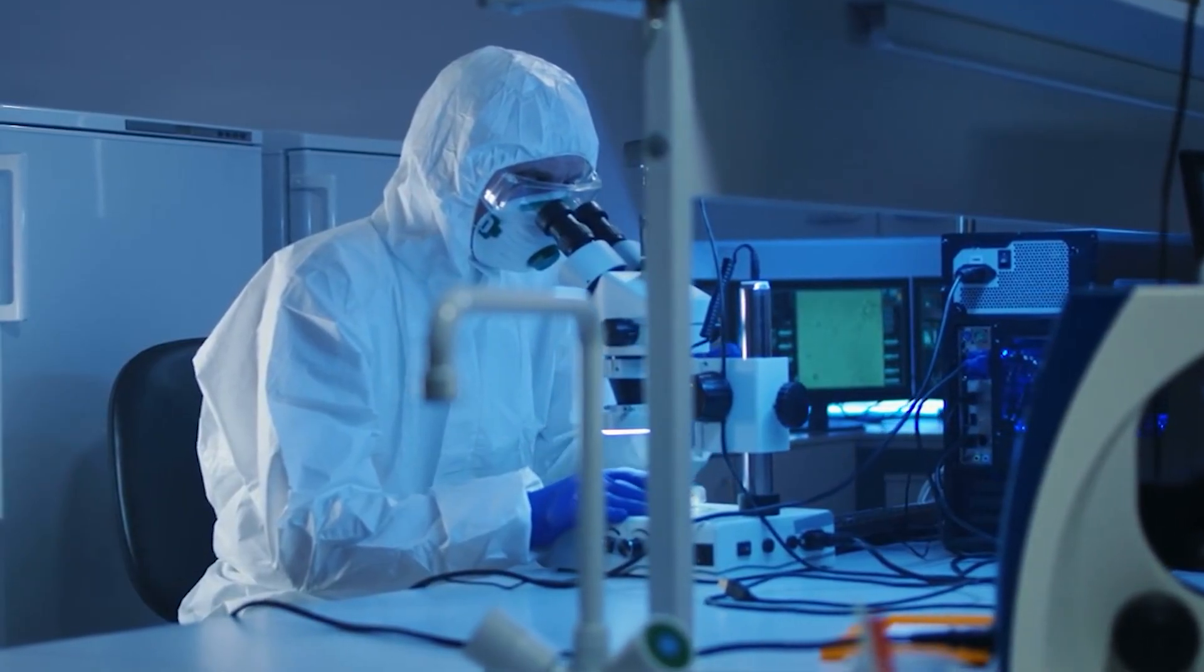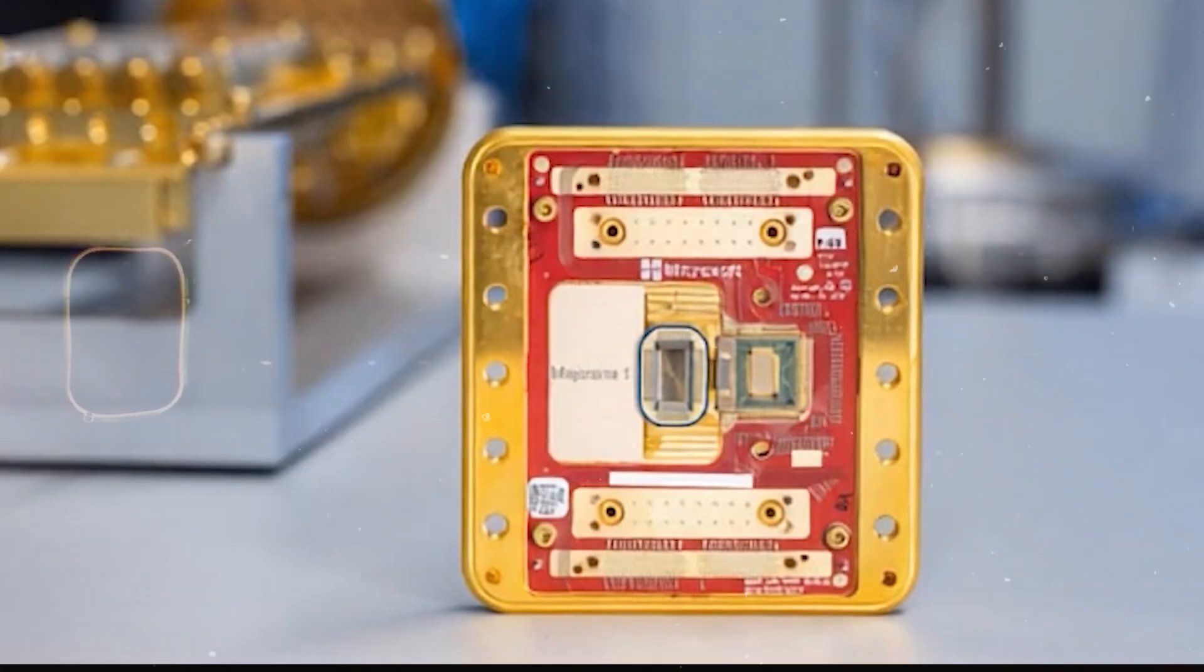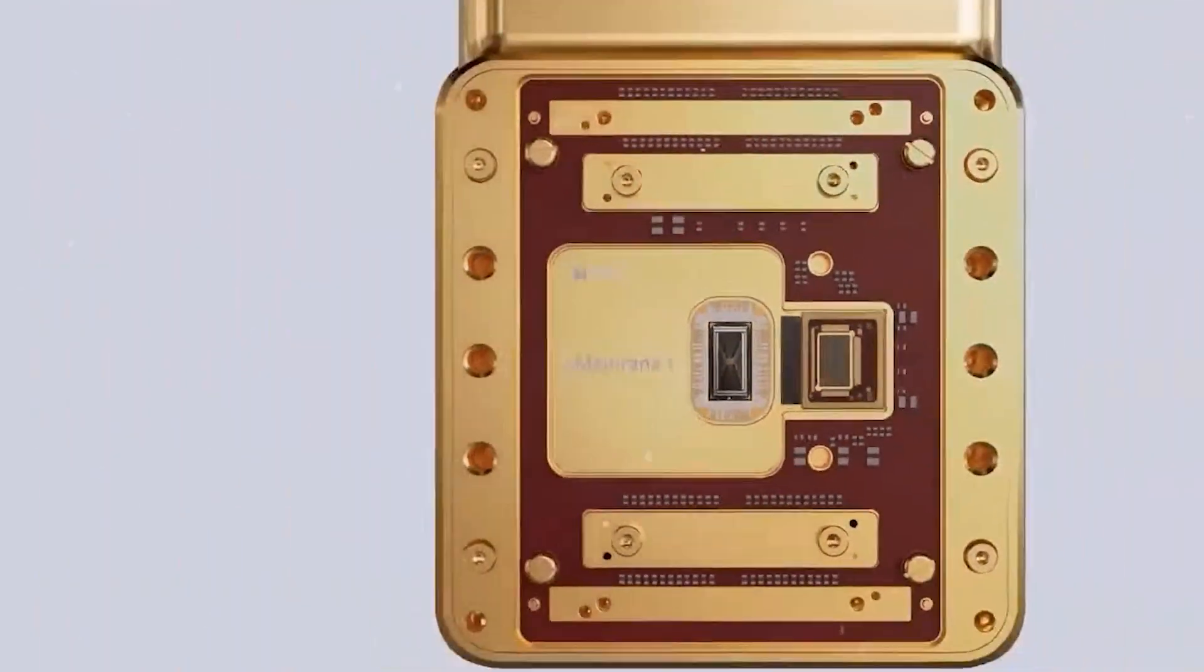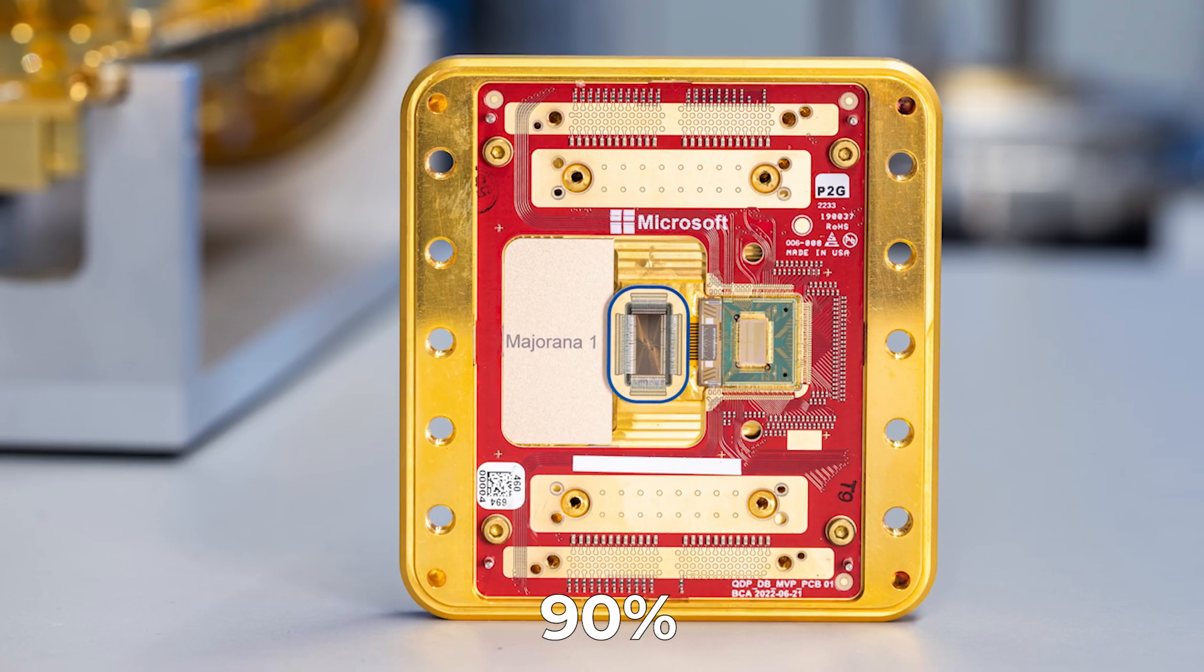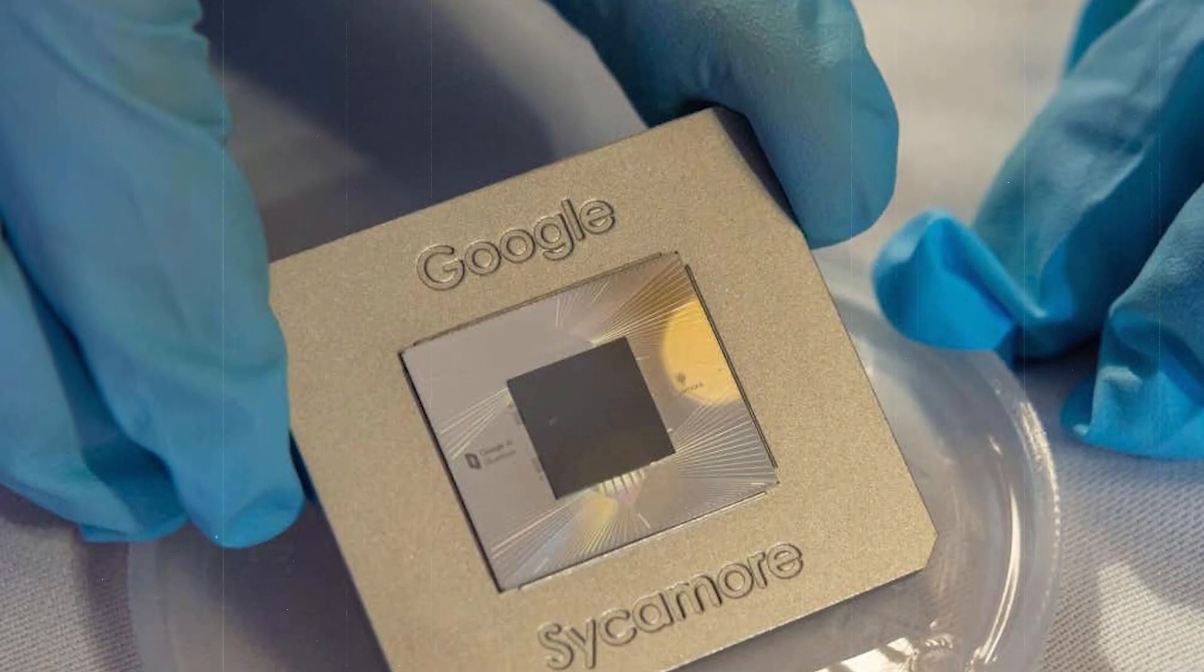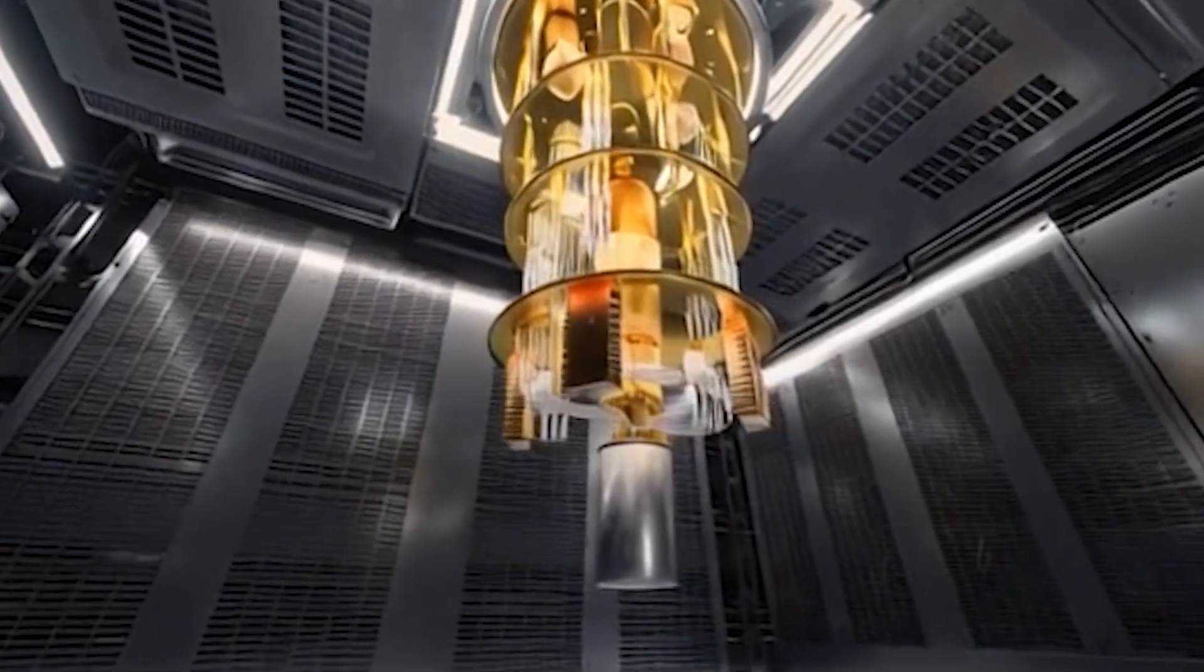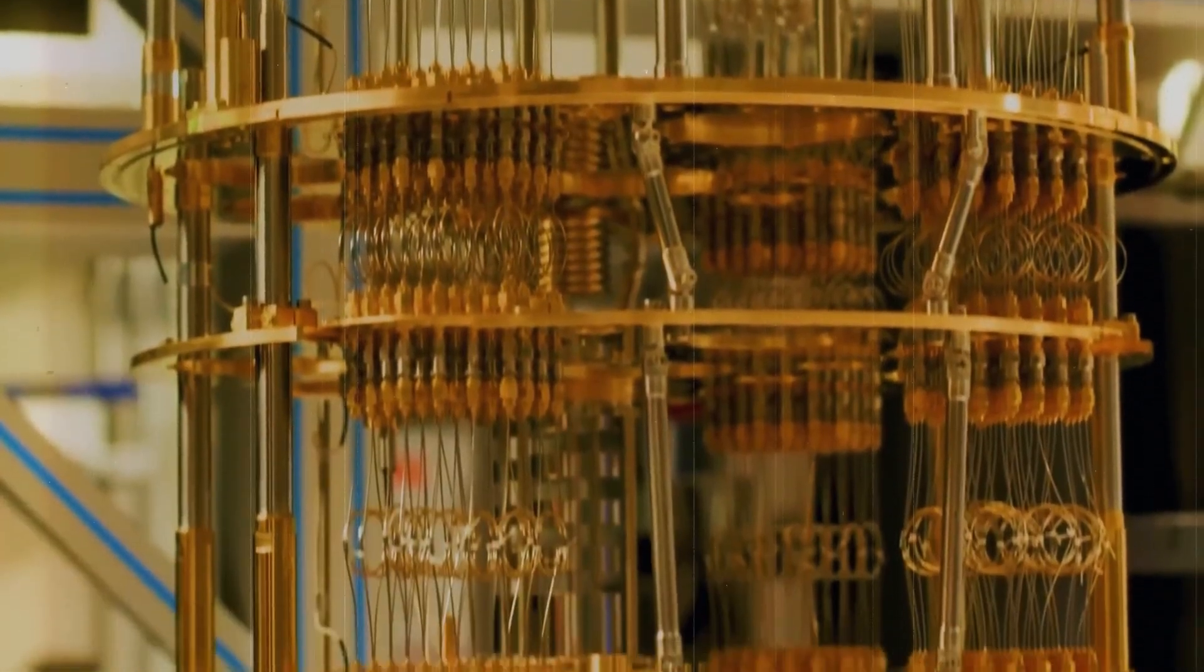So why the sudden flurry of progress? In late 2024 and early 2025, three of the biggest technology companies made announcements that reignited excitement worldwide. Google introduced Willow, its most advanced quantum processor to date. Microsoft unveiled Majorana One, a chip designed around exotic theoretical particles. And Amazon revealed Ocelot, a prototype aimed at cutting error correction costs by as much as 90%. Each of these projects tackles the same critical challenge: quantum error correction. Without effective error handling, quantum machines remain too unreliable to be useful. Yet, fascinatingly, each company has chosen a radically different strategy.